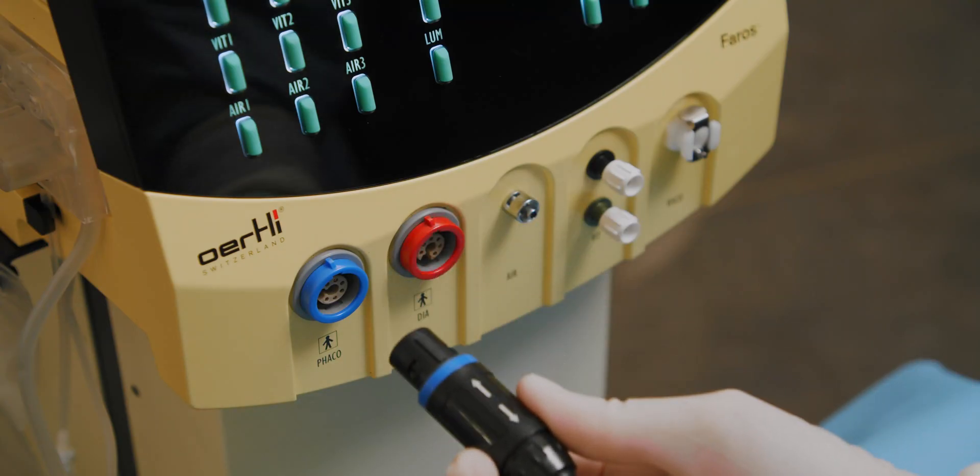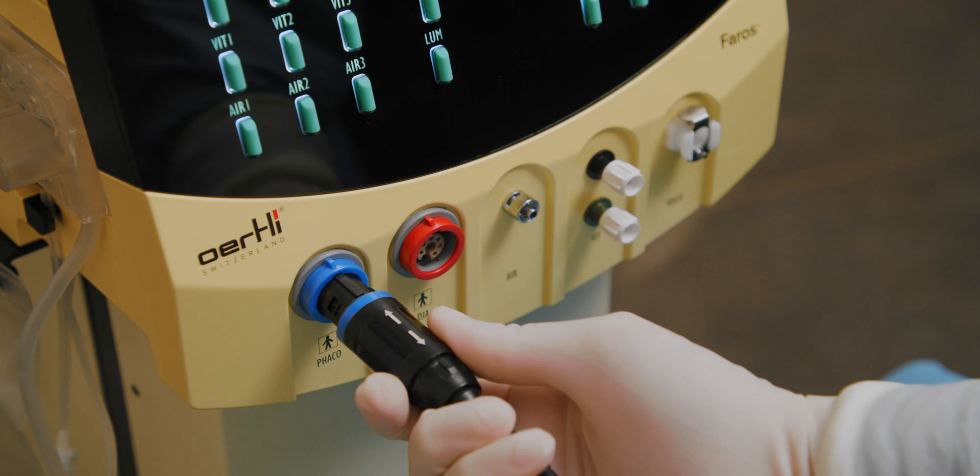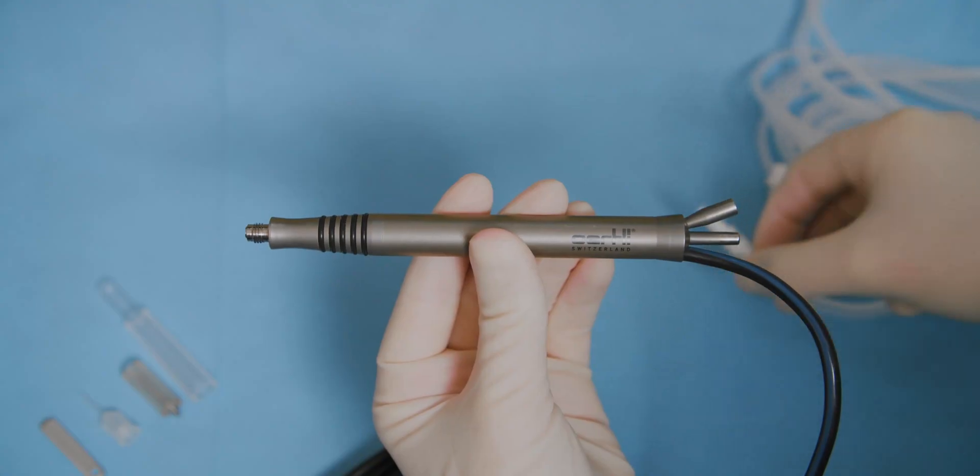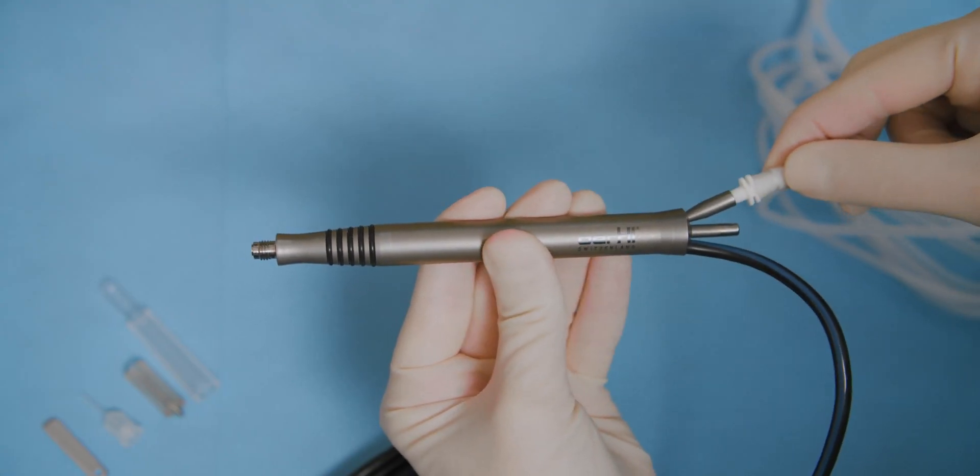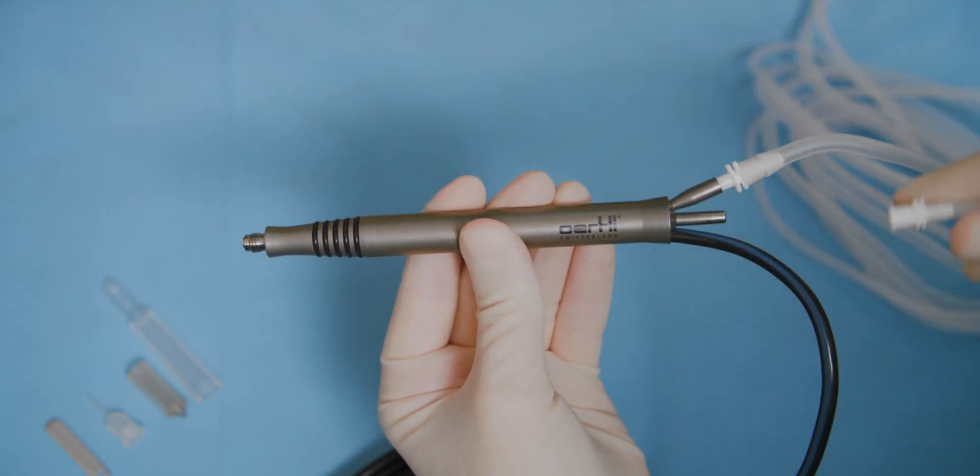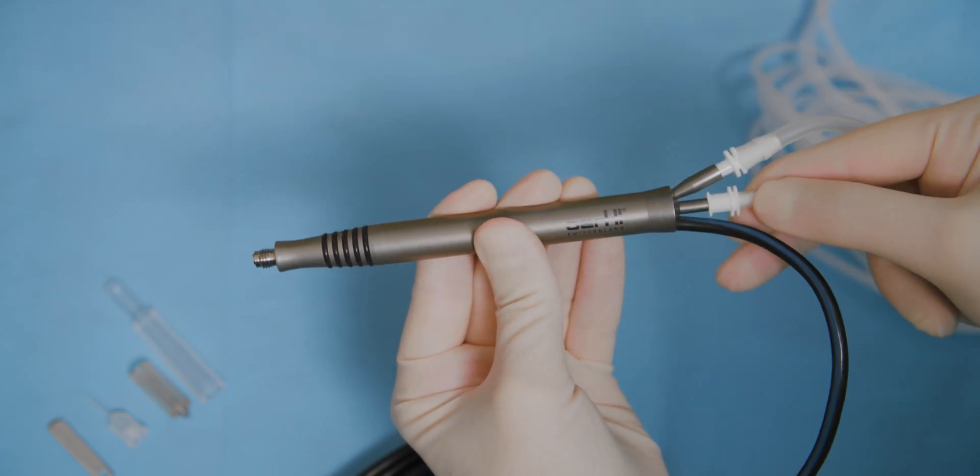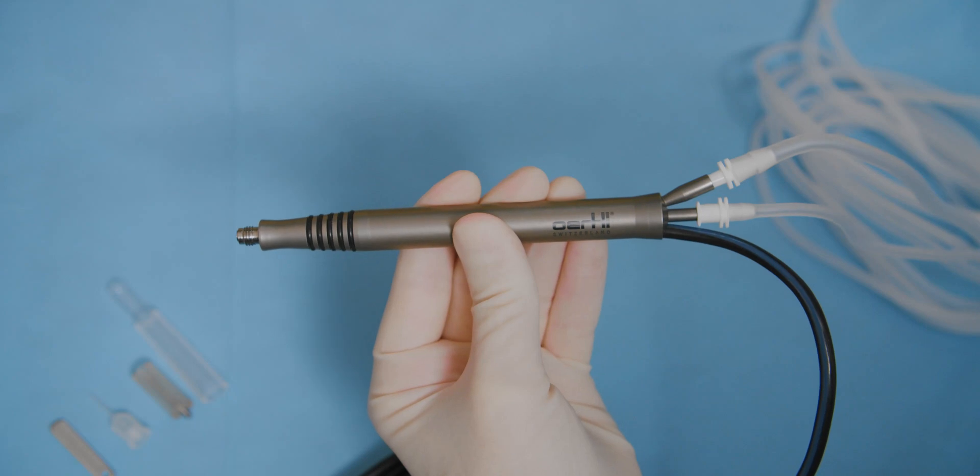Connect the Oertli phaco handpiece to the Pharos. Connect the irrigation and aspiration lines to the ports on the phaco handpiece. Make sure that the connections are secure.